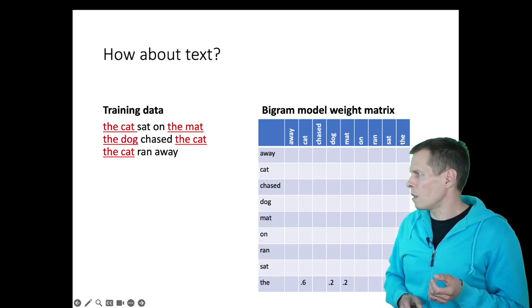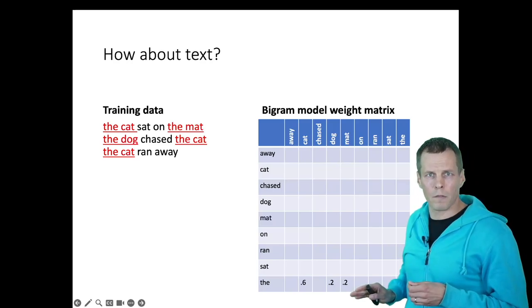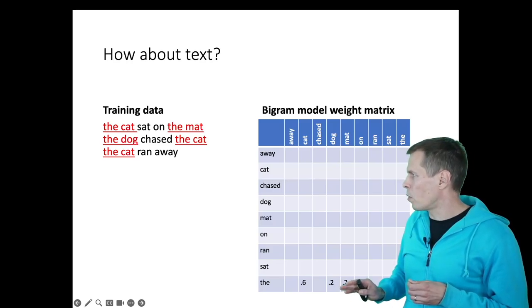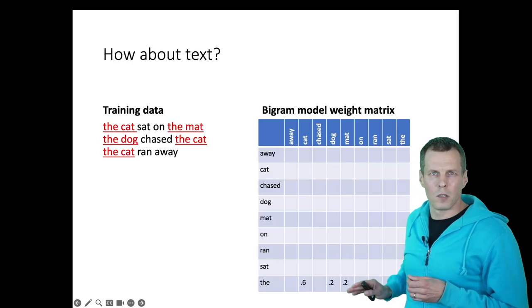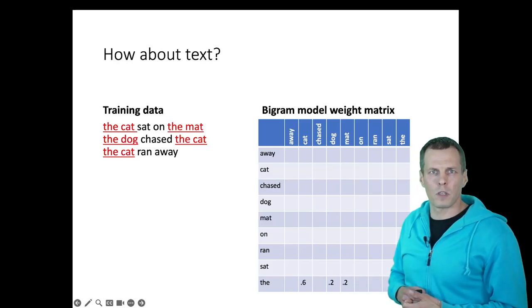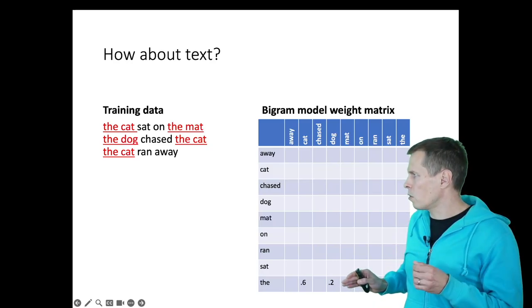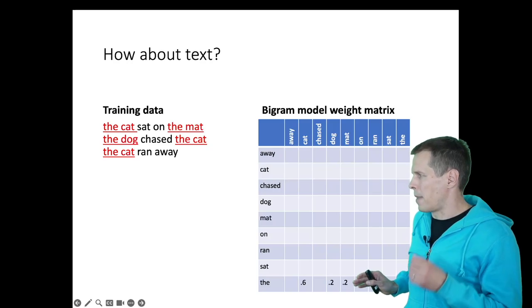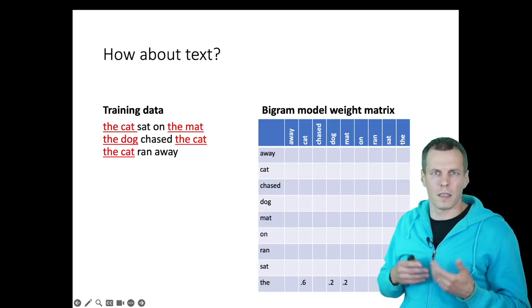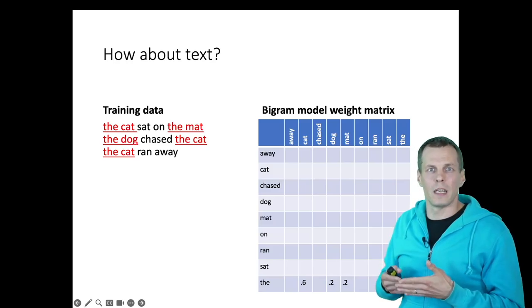The general idea is that when we start to train this kind of prediction model that works with language, we take a look at the word 'the.' The word 'the' is here and is followed by 'cat' three times, followed by 'dog' once, and 'mat' once. So we can say that when we see the word 'the,' then 60% of the case we have 'cat' as the next word, and 20% of the case we have 'dog,' 20% case we have 'mat.' That gives us these probabilities and we can start simulating new data from this model.